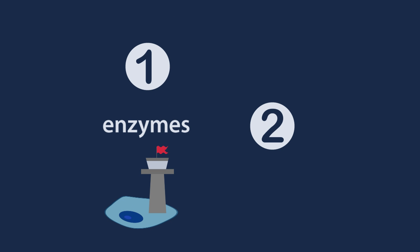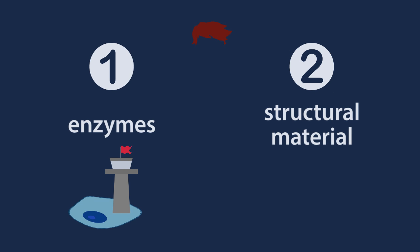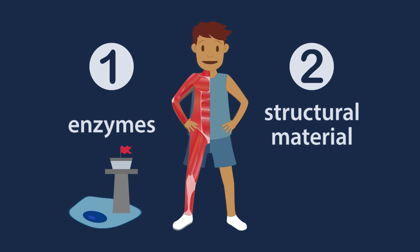Proteins have two major functions in living things. They are the enzymes that control all the reactions that take place in the cells of all living things, and they form the structural material in animals: hair, bones, skin, muscles, and the vital organs.